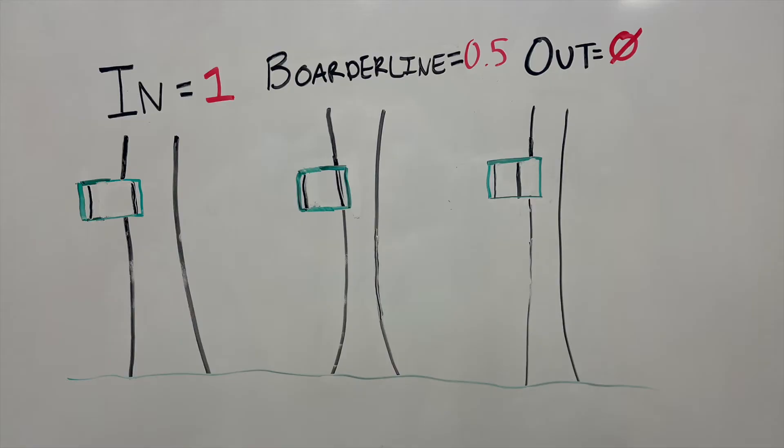If a tree is in, you will record a 1 in your count. If a tree is borderline, you will record a 0.5. You will not record any trees which are considered out.